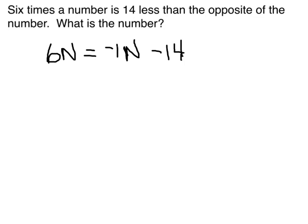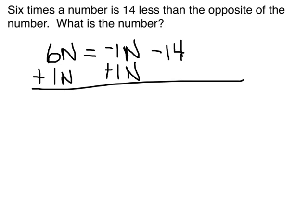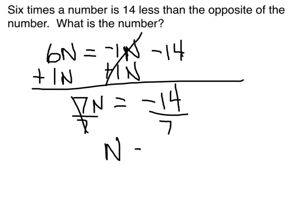All right, well, here I find that I have an N term on both the left and the right. I want to get them both on the left. So what I'm going to have to do here is add 1N to get that to cancel out. So I'll add 1N here. Remember, this is gone. 6 plus 1 is 7N equals negative 14. Then continuing to get N by itself, I have to get rid of 7. It's been multiplied, so I need to divide by 7, and I'll do that on both sides. That is gone. N is equal to negative 2, and negative 2 is the number.